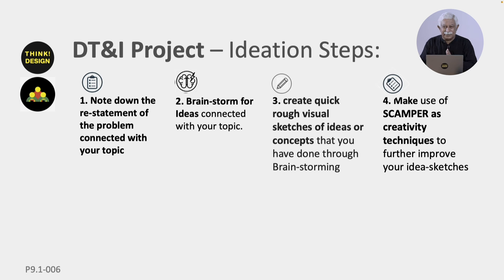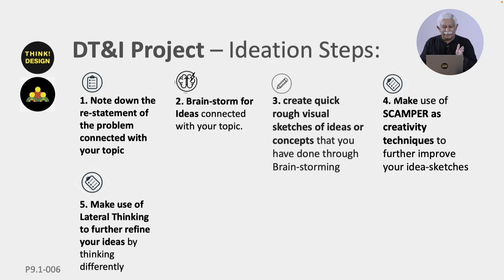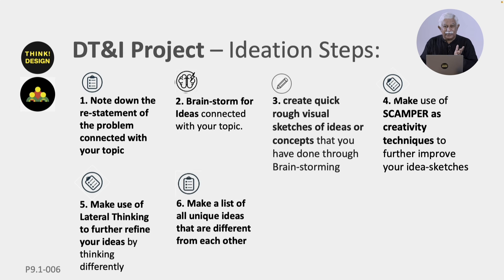Then you go on to the SCAMPER technique — seven methods through which you can actually refine and improve the ideas. The fourth technique is lateral thinking, which is trying to find a solution in another place, in a different way, or thinking differently. Make use of lateral thinking to further refine your ideas. Then make a list of all these ideas, making sure that your ideas are unique and different from each other. That is the exercise you need to do in this project.